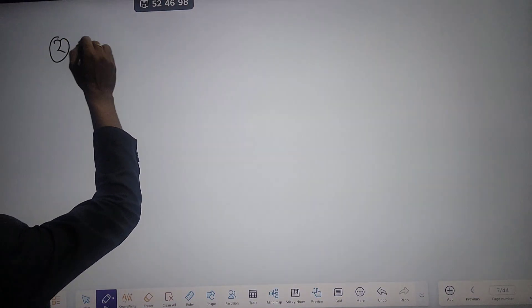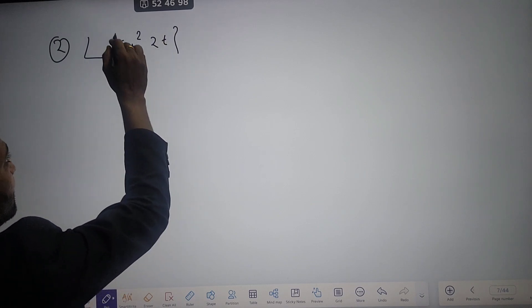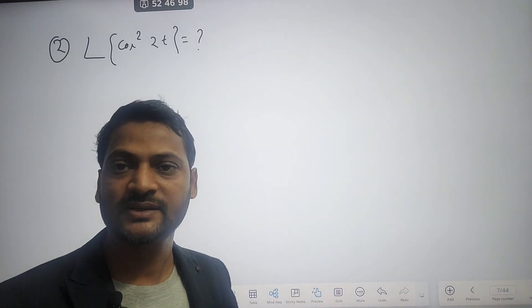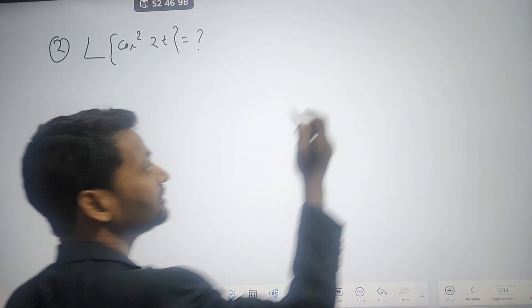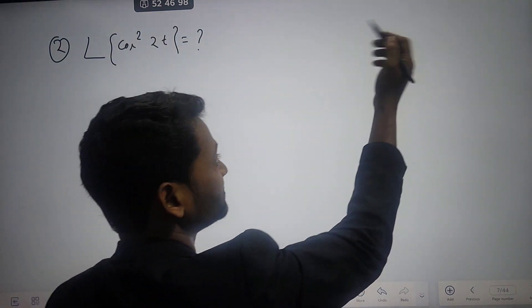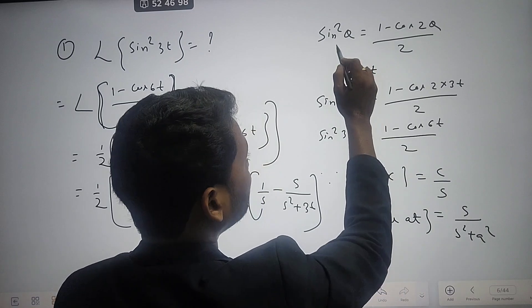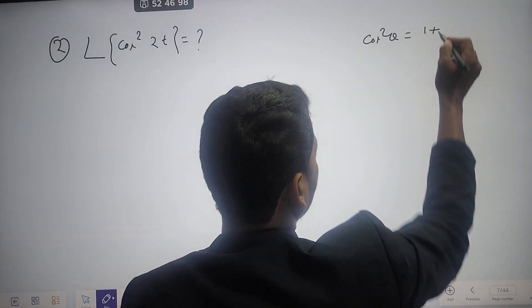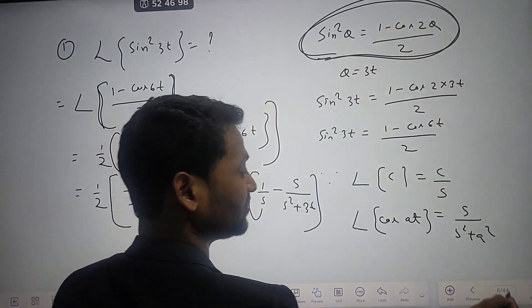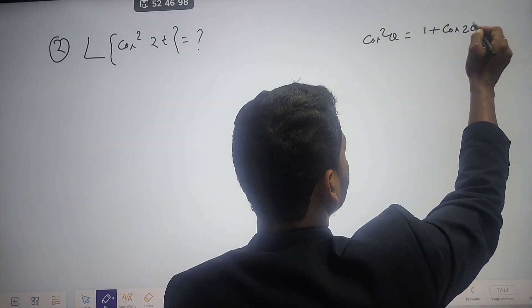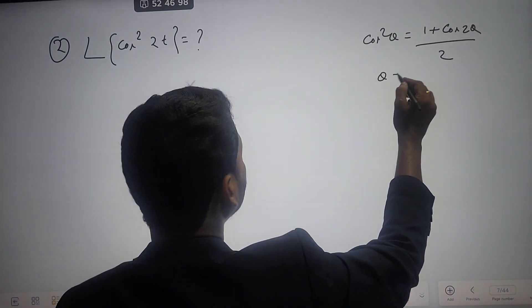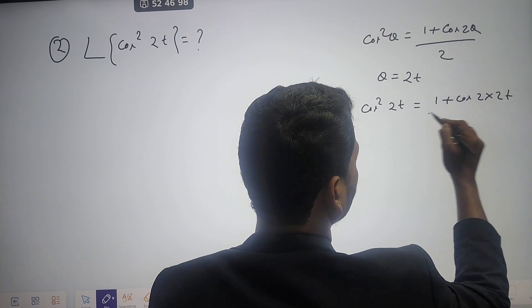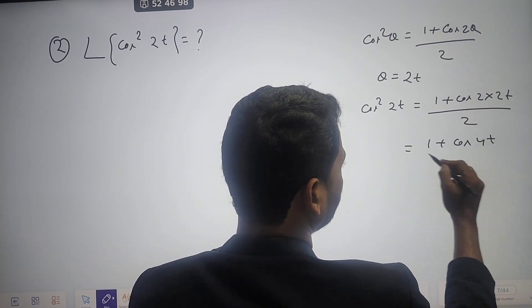Coming to the second question: Laplace of cos²(2t). It is again a square trigonometric function, and we cannot get a direct answer. We need to convert it to a normal function. Recall that sin²θ = (1 − cos2θ)/2. Similarly, cos²θ = (1 + cos2θ)/2 — the only difference is plus instead of minus. Here θ = 2t, so cos²(2t) = (1 + cos(4t))/2.